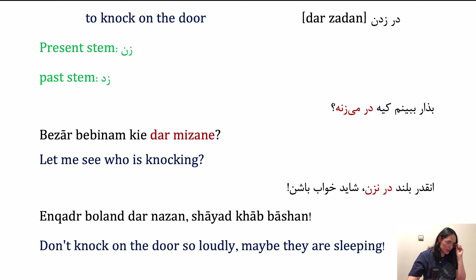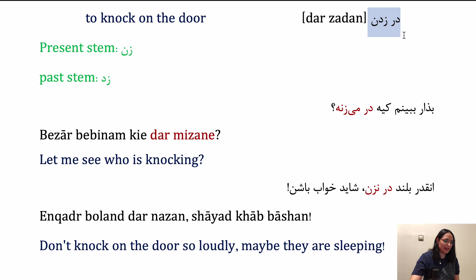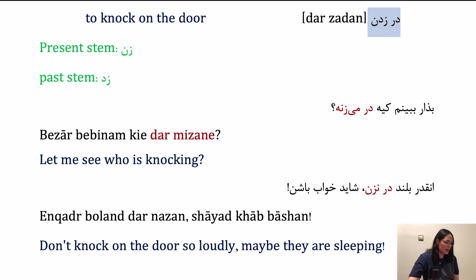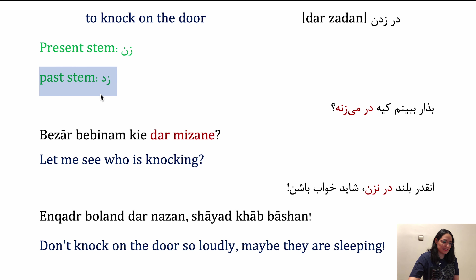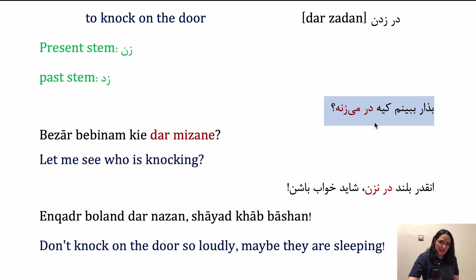The first verb is dar zadan. The present stem is zan and the past stem is zad. Example: بذار ببینم کیه در میزنه — Let me see who is knocking at the door.